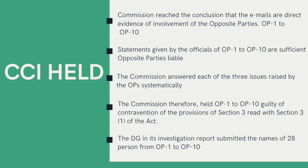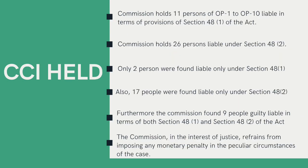The Commission therefore held OP1 to OP10 guilty of contravention of the provisions of Section 3 read with Section 3. As the contravention by OP1 to OP10 was established, the Commission went on to analyse the conduct of directors, officers, and employees of the opposite parties to determine who would be liable for such anti-competitive acts under Section 48 of the Act, which essentially talks about contravention by companies. The Director General had submitted the names of 28 people from OP1 to OP10, out of which the Commission held 11 people liable under Section 48, Subsection 1 of the Act and 26 people liable under Section 48, Subsection 2. Only two people were found to be liable under Section 48, Subsection 1 — those who were in charge of and responsible for the conduct of the business of the company during the time of contravention.